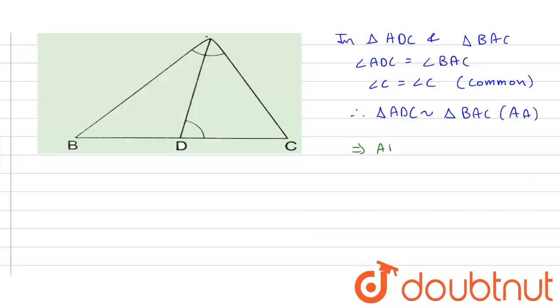So AD upon BA is equal to DC upon AC is equal to AC upon BC. From this we get DC upon AC is equal to AC upon BC.